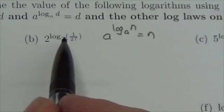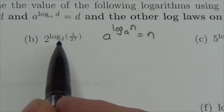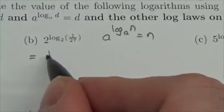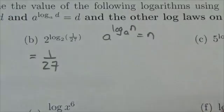Oh, so the fact that this is a power of 2 and a log base 2 means that those are inverses of each other. They're going to cancel each other out, and we're simply going to get this to become 1 over 27.